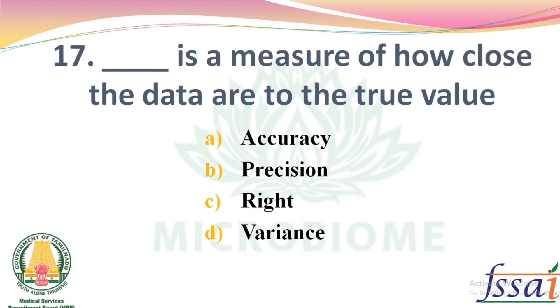Dash is the measure of how close the data are to the true value. Options: Accuracy, Precision, Right, Variance. The right answer: Option A, Accuracy.